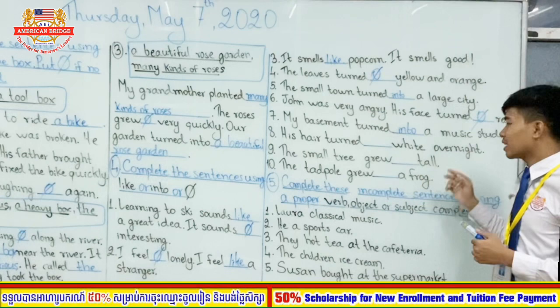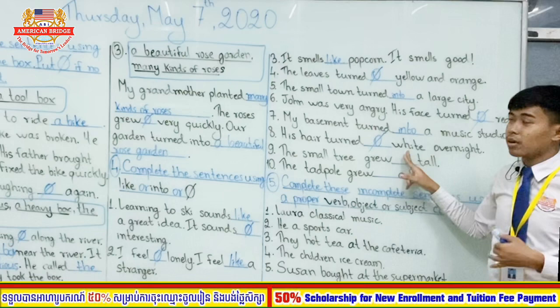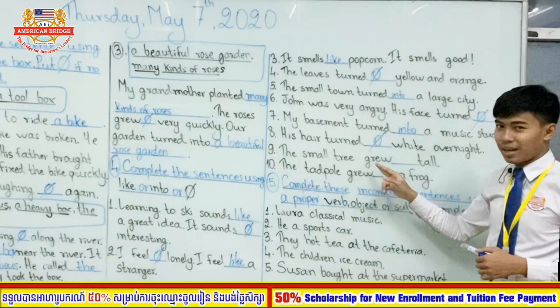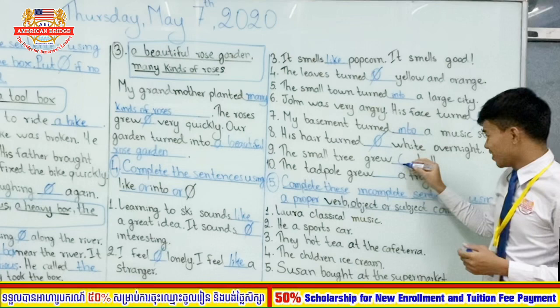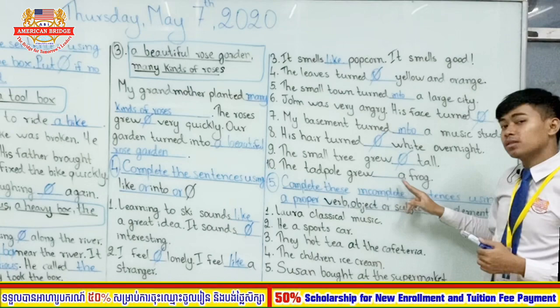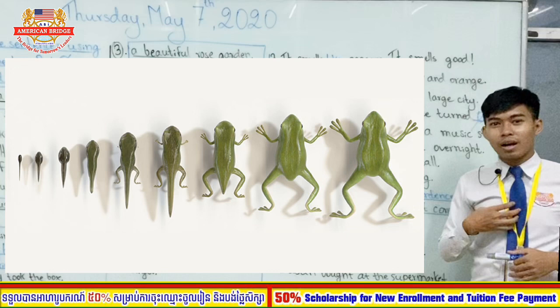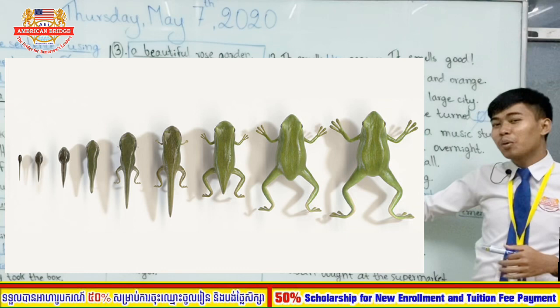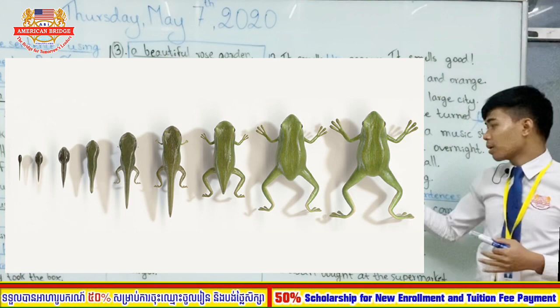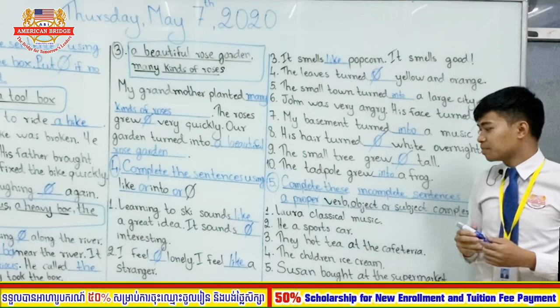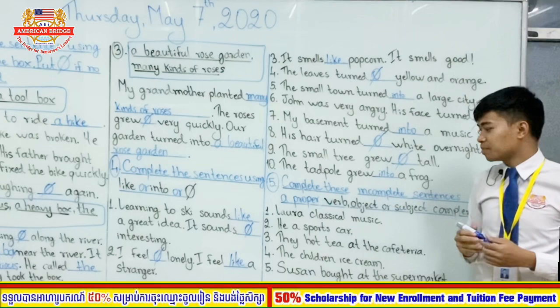Number 8: His hair turned white overnight — no word needed. When we talk about color: turn yellow and orange, turn red, turn white. Number 9: The small tree grew tall — no word needed. Number 10: The tadpole grew into a frog. A tadpole is mostly black; when it grows up it becomes a frog. First it is a tadpole, then it becomes a frog, so we use 'into.'